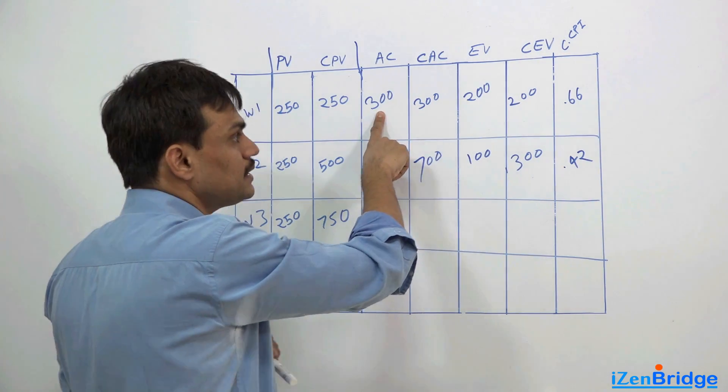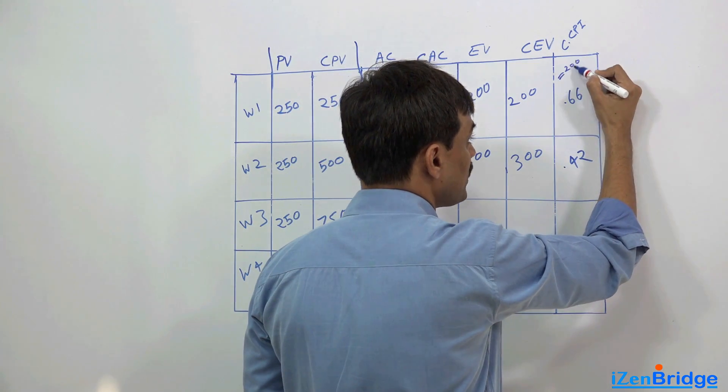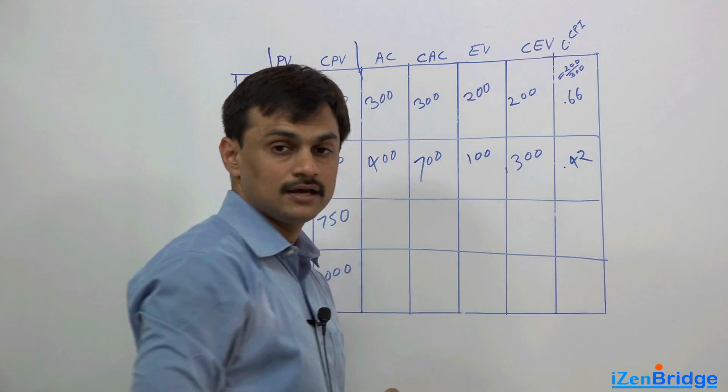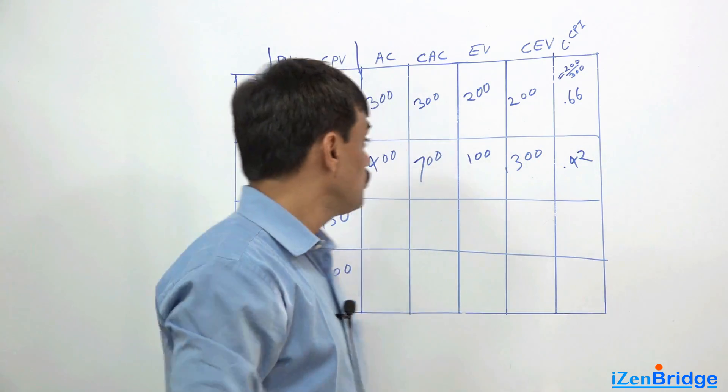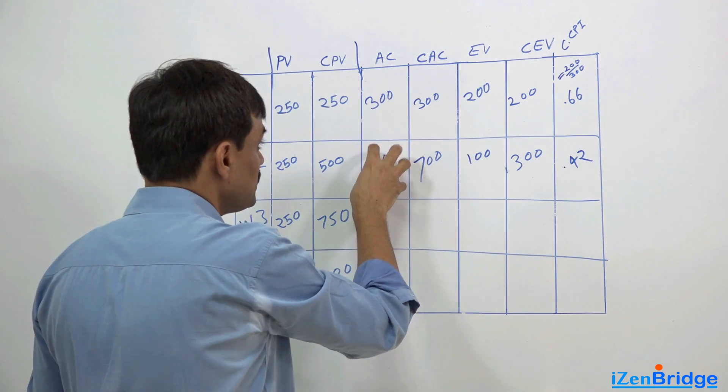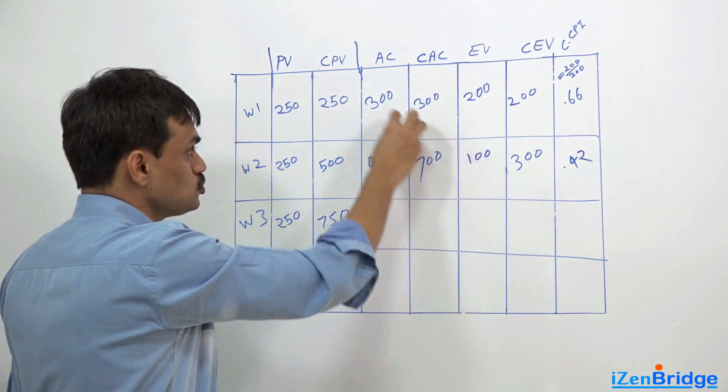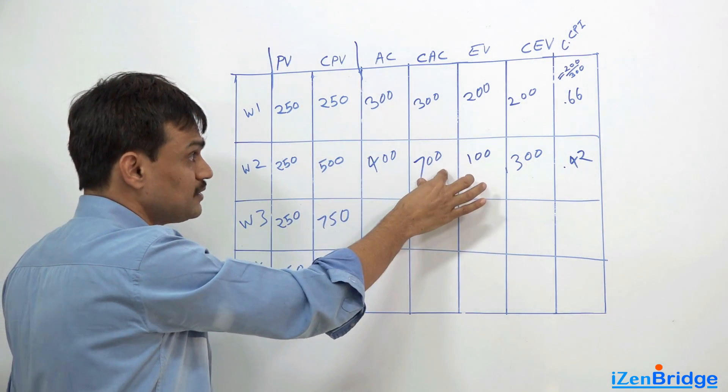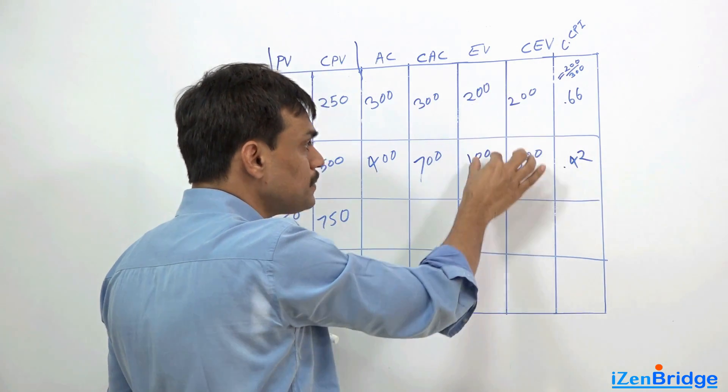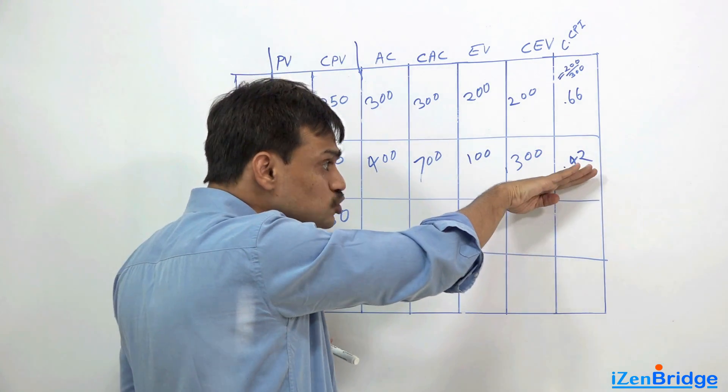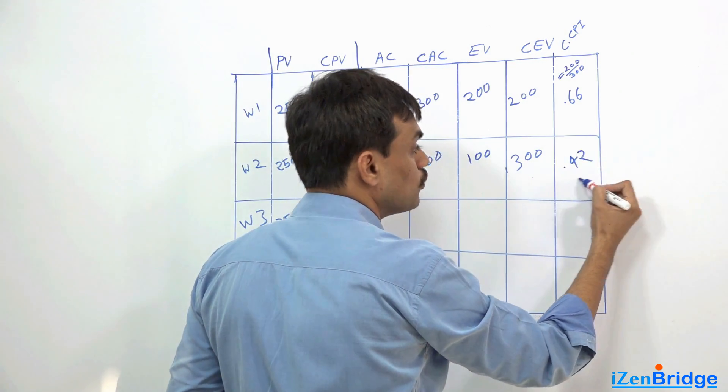We spent $300 and we earned $200. So if I calculate cost performance index which is $200 divided by $300, it comes to 0.66. Our first week cost performance index was 0.66. Then we carry on the work and in the next week we spent $400 and we earned $100. So cumulatively by the end of 2 weeks we spent $700 and cumulatively we earned $300 work.